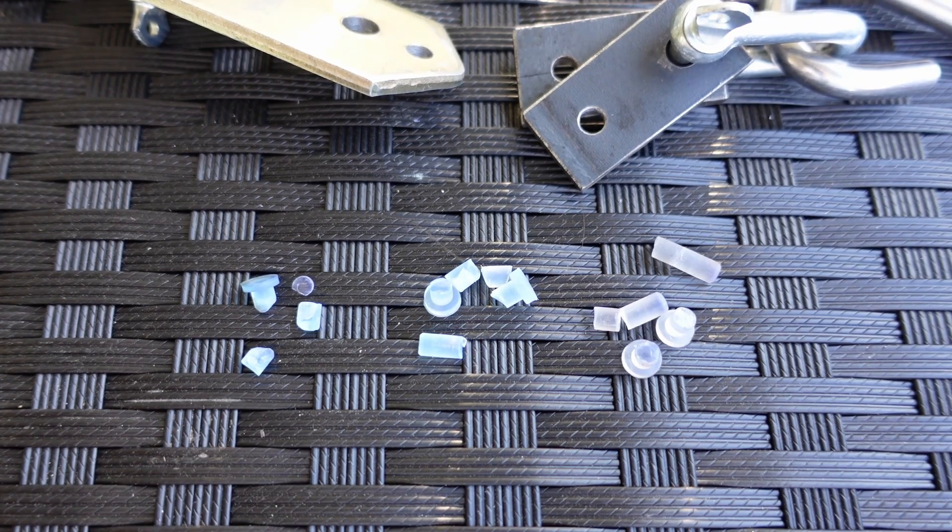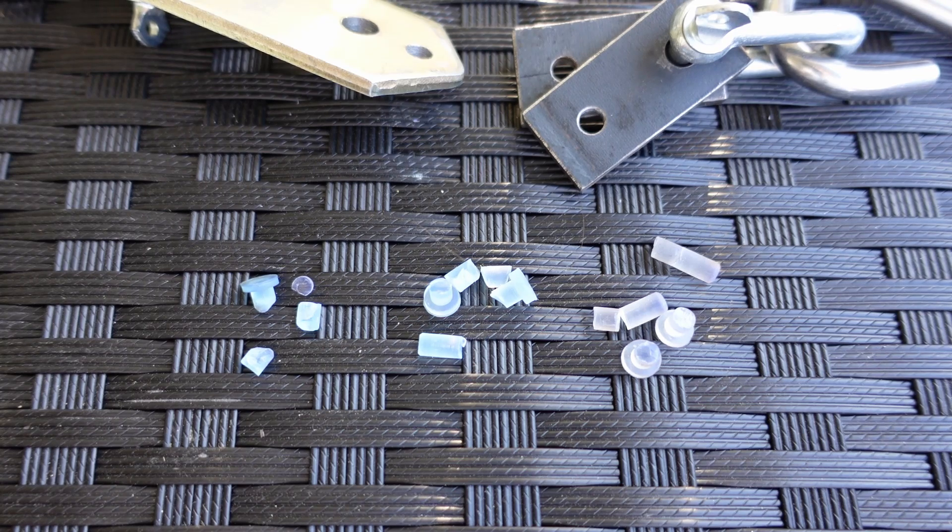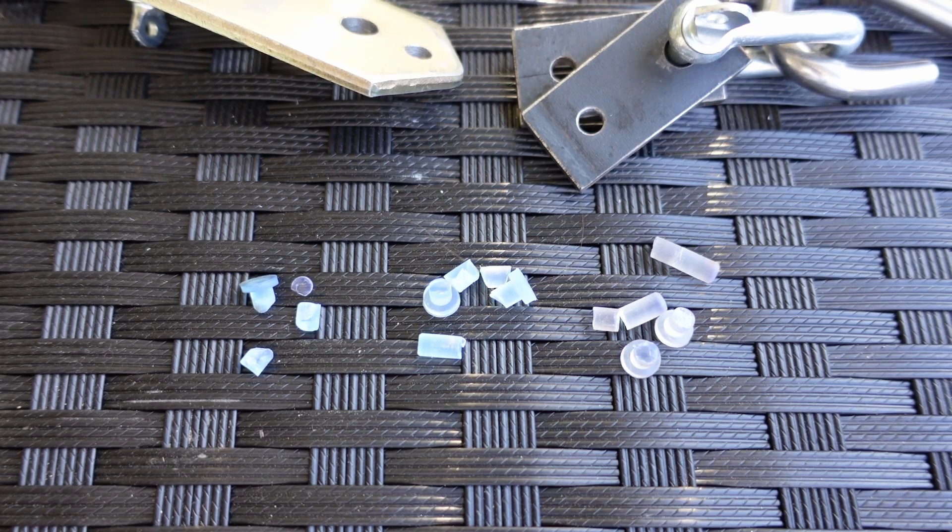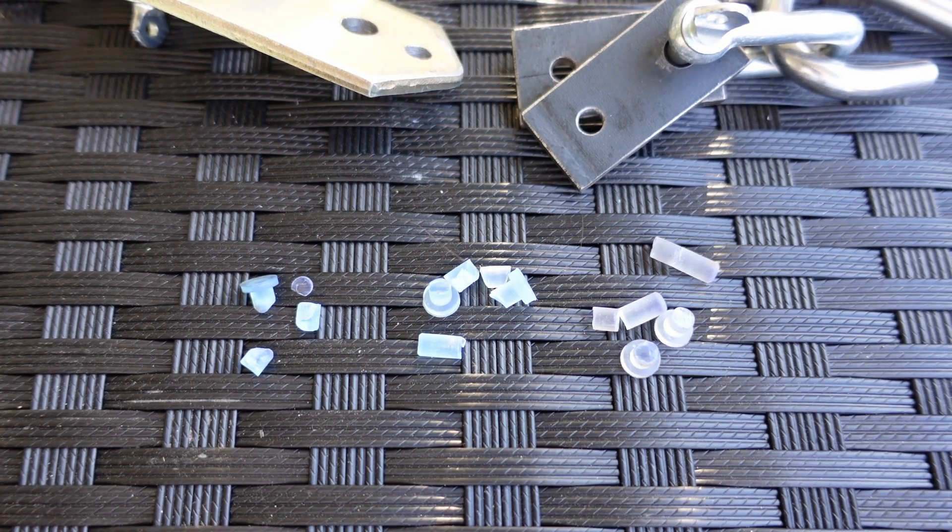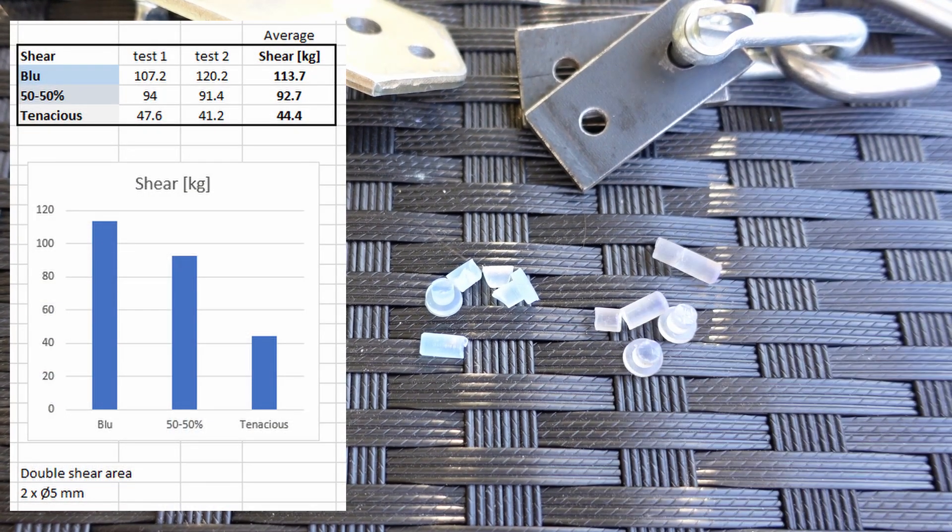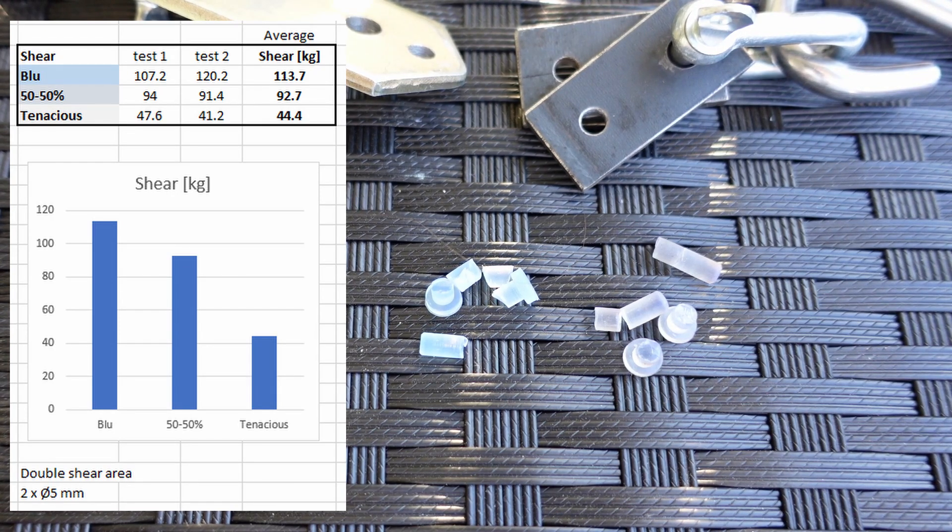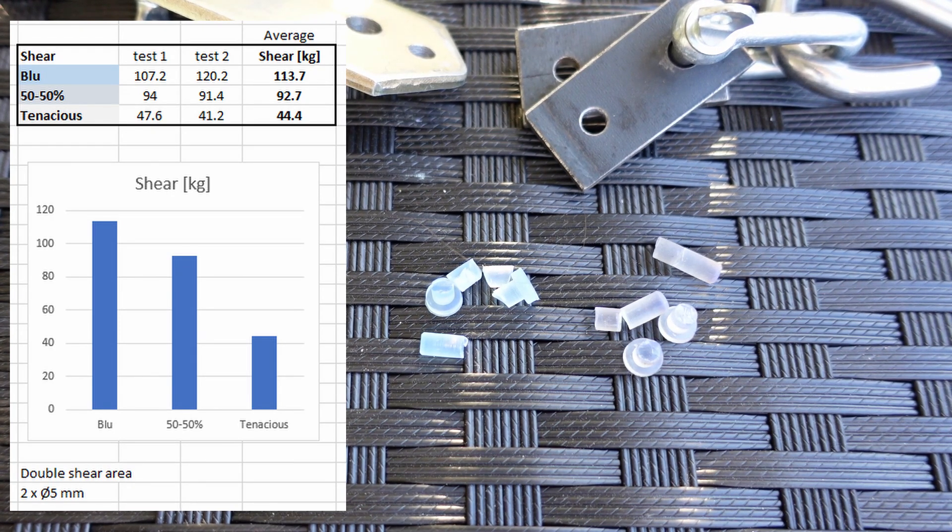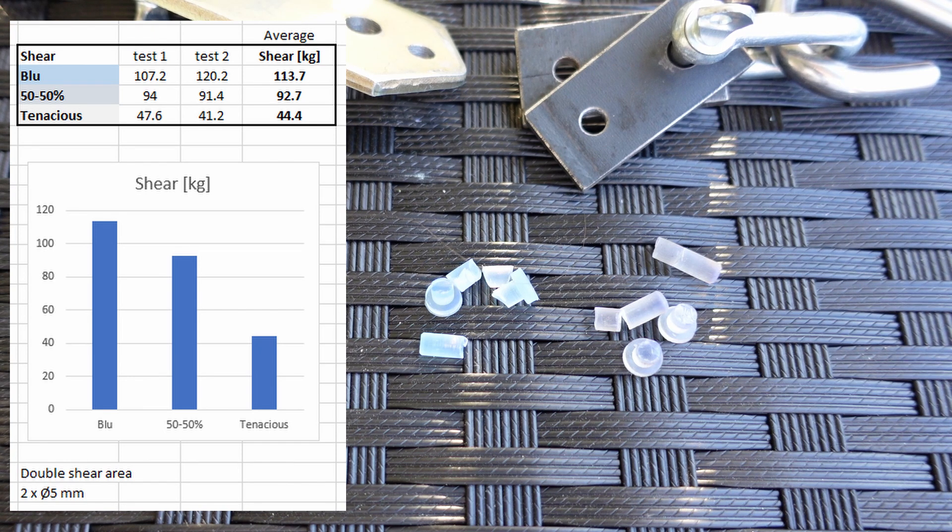Well, for the feeling, the Siraya Blue was far the strongest, but it breaks very suddenly. Well actually, the mixture also was sheared very suddenly, but on much lower force. And the Tenacious was the weakest for the feeling, but of course, this is a different type of resin.